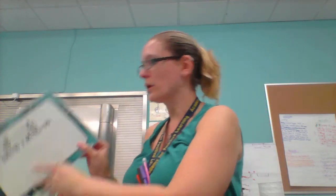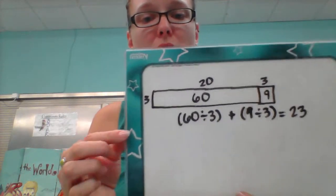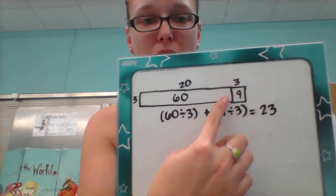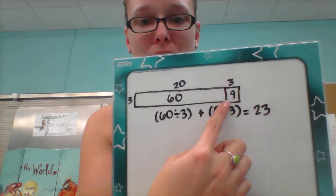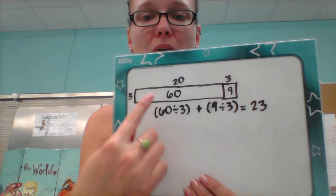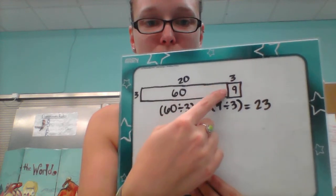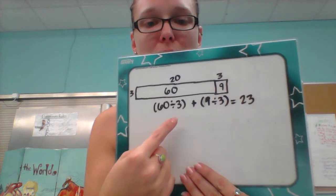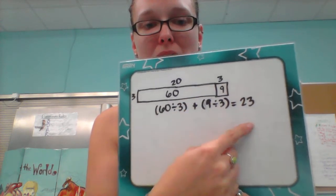The reason why this works, if you look at it on the area model, I have gridded out 3 by 69, then I blocked off my 9 and 60 and there are 20 in this row and 3 in this row, which makes a total of 23. So 60 divided by 3 plus 9 divided by 3 is 23.